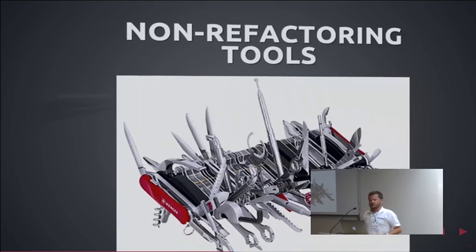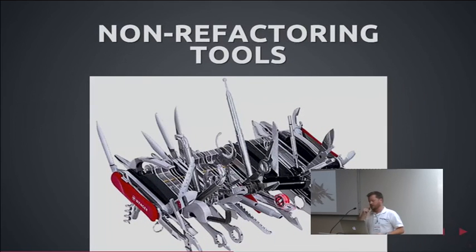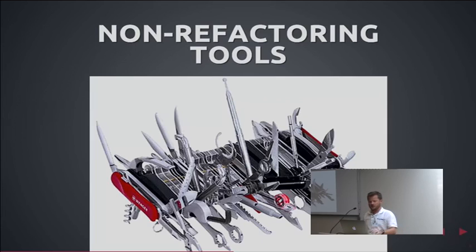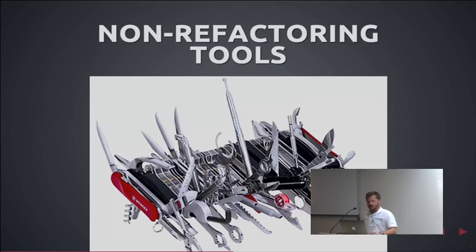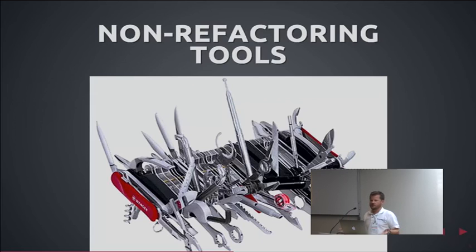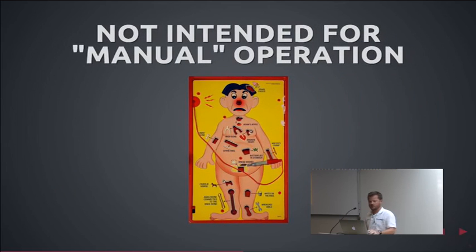Rope also has a lot of non-refactoring-related things like finding doc strings and finding definition points, which are great IDE tools as well. Frankly, I use JEDI for a lot of that kind of stuff now, but I still use Rope and Trod for pure refactorings. Rope is not intended for manual operation — it's really tricky to get right, so let your IDE or integration tool do the heavy lifting for you. That's where Trod comes in.